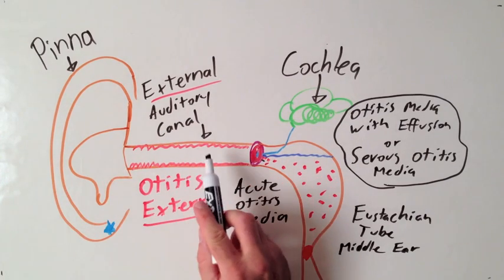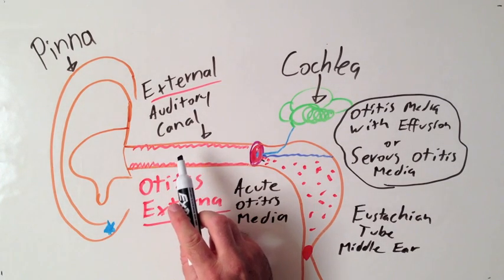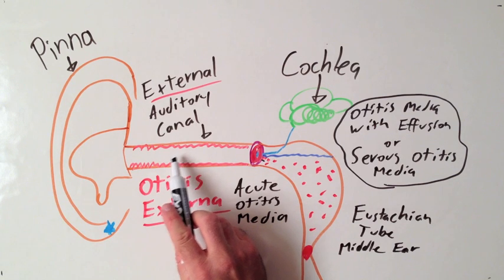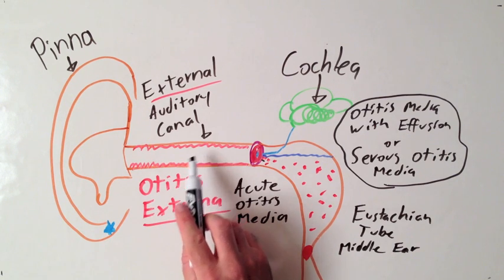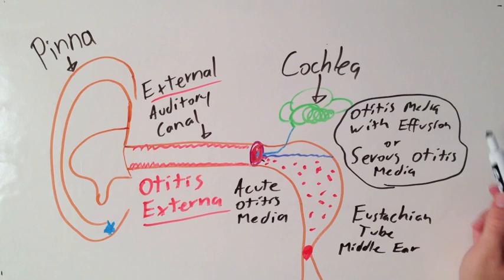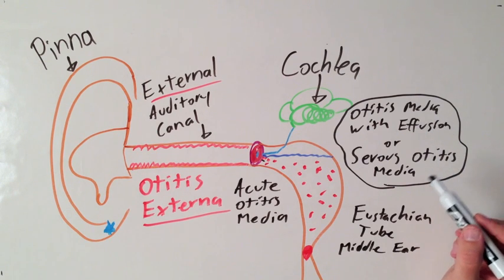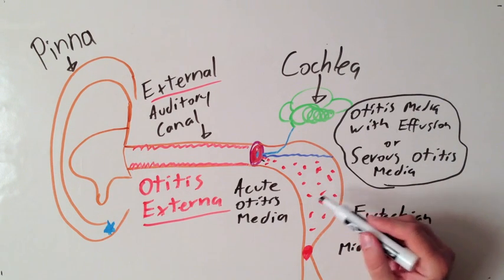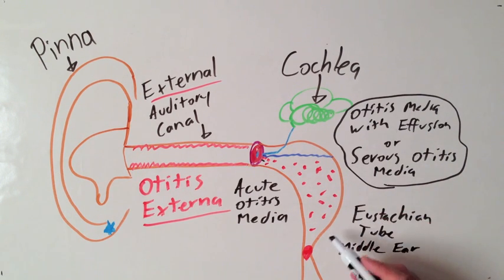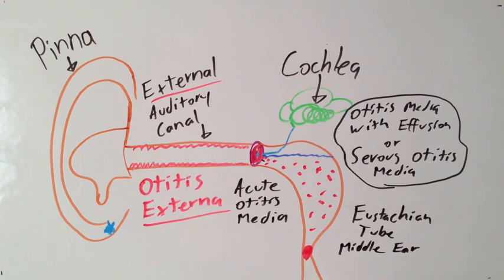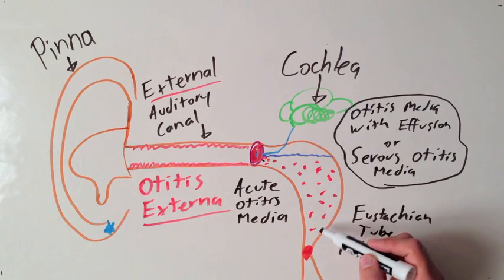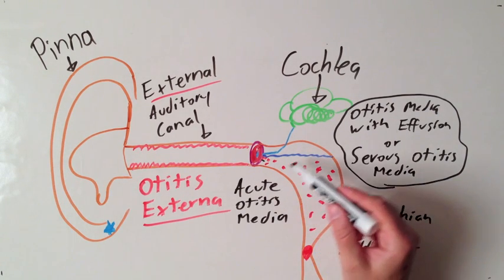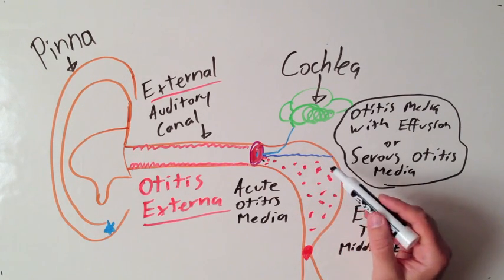As a review, we first have otitis externa, which is an infection of the external auditory canal — eardrops can be helpful for this. We have otitis media with effusion, or serous otitis media. This is not a true infection; it's more pain because of buildup of fluid. The goal is to get rid of this clog in the eustachian tube. And finally, we have acute otitis media, which is a true infection of the effusion, and for this we need oral antibiotics.